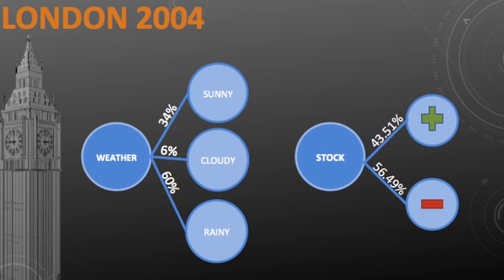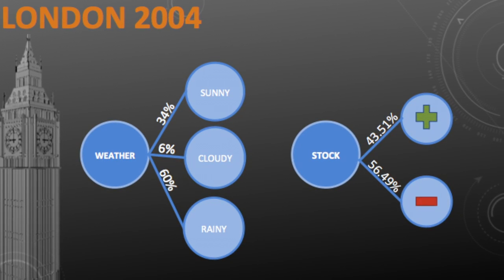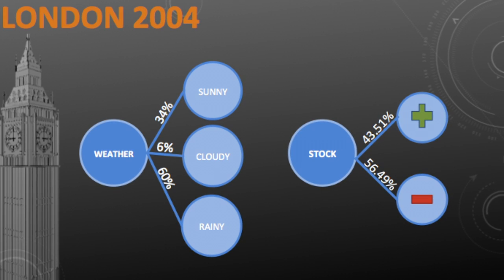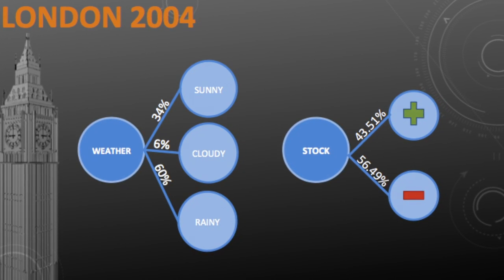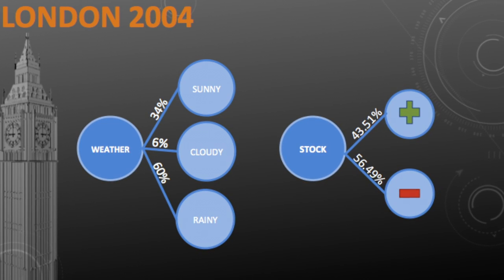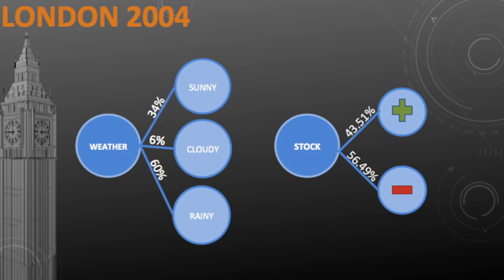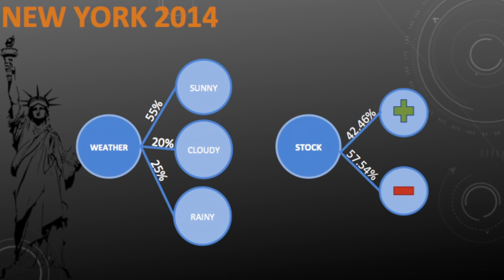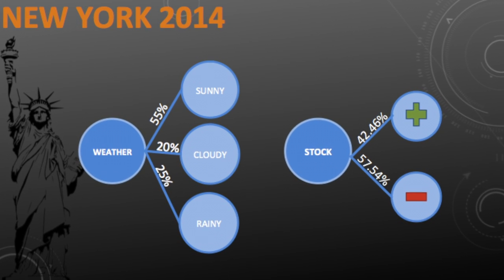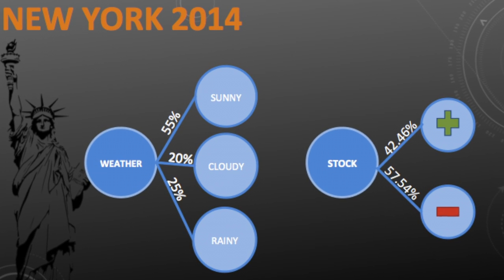We've computed the probability that it's either sunny, cloudy, or rainy, and that the change in index is either positive or negative in three cities for one of the two years. In London 2004, there's a 60% probability that it's rainy, and there's not a big gap between the probability that the change in index is positive or negative. For New York, we have a higher probability that it's sunny, but still an almost equal probability that the change in index is either positive or negative.